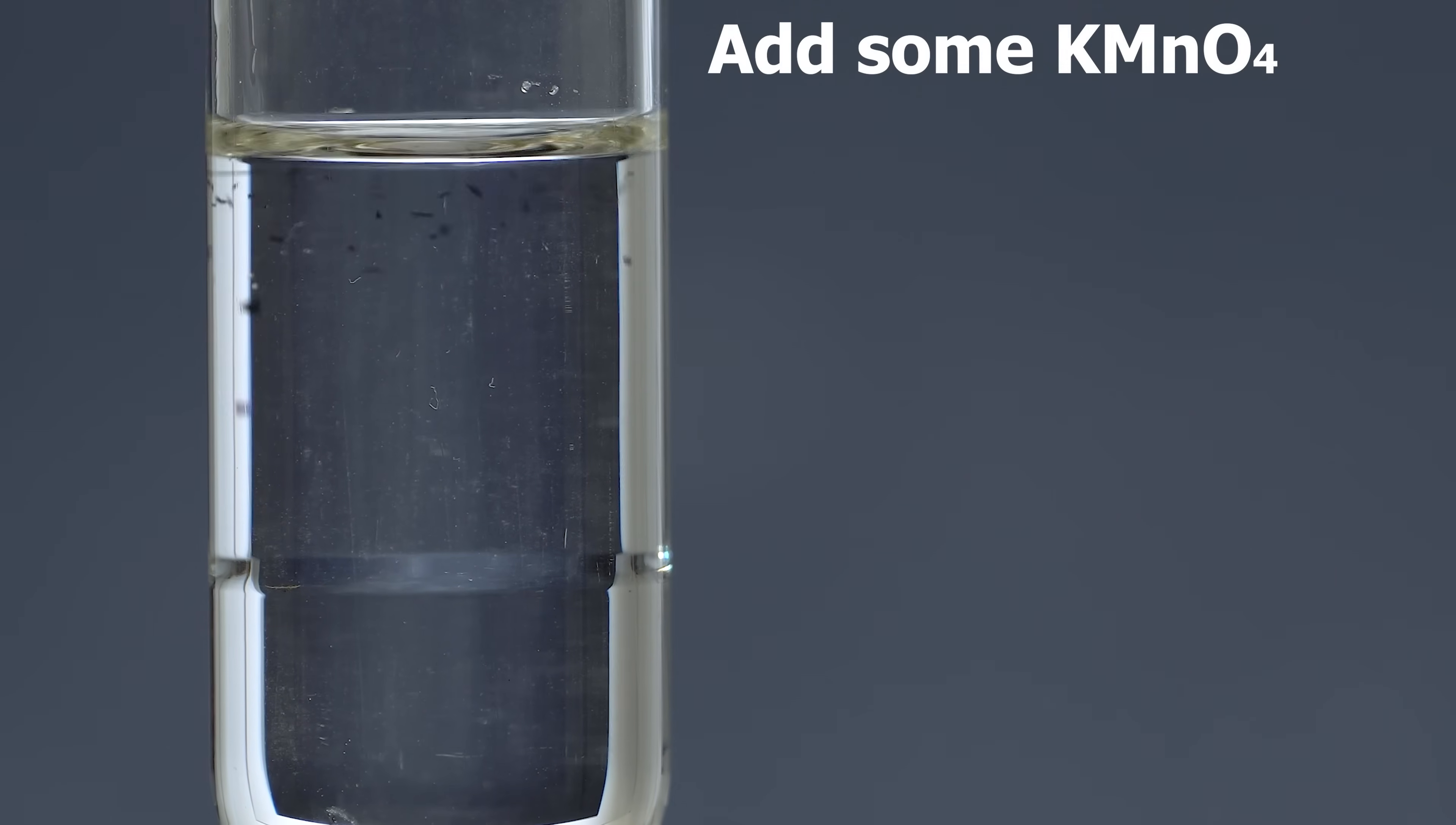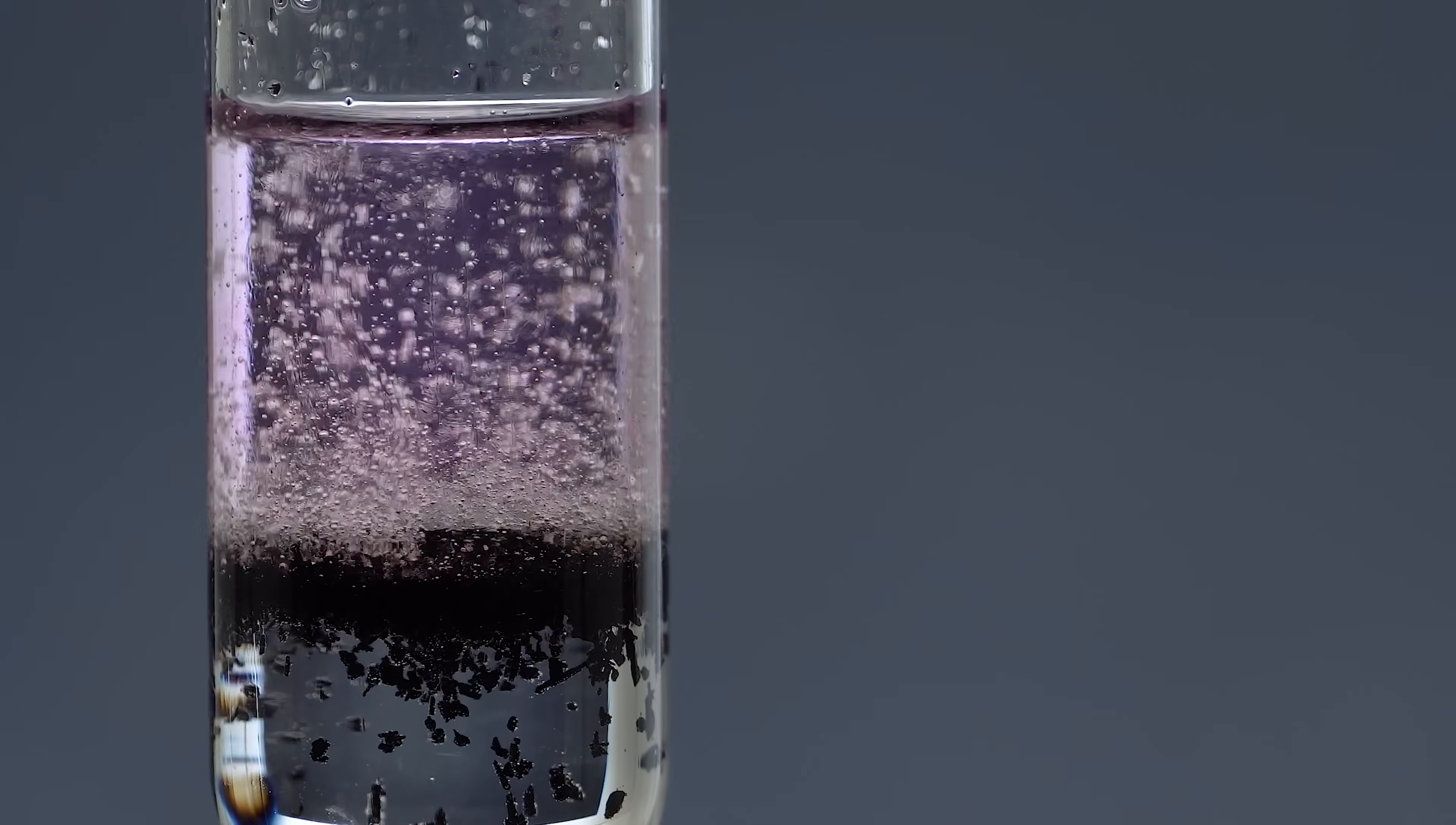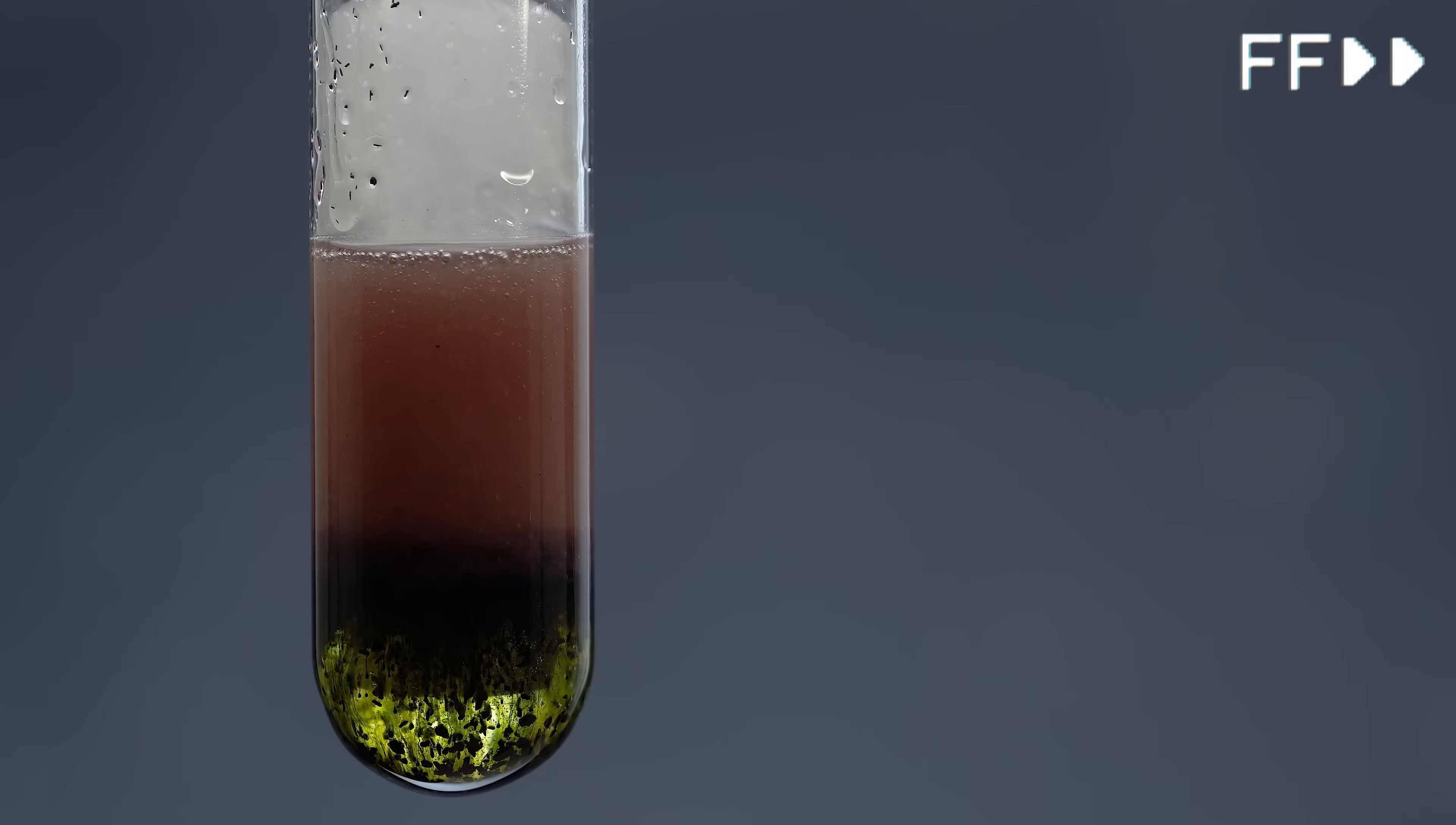We then add some potassium permanganate into the test tube, and after a while the reaction starts to make a gradually louder crackling sound that resembles thunder.